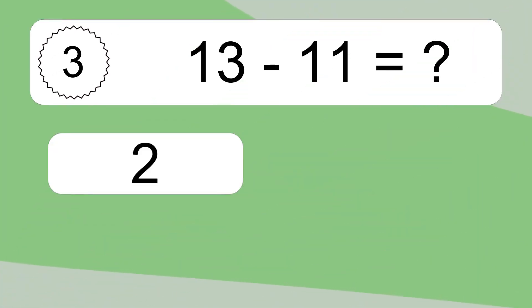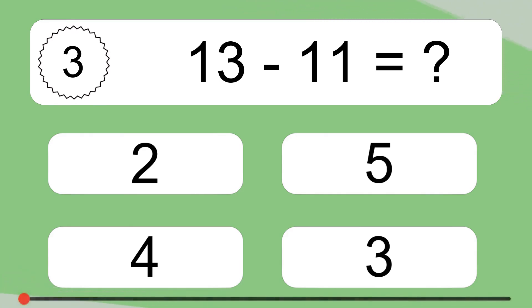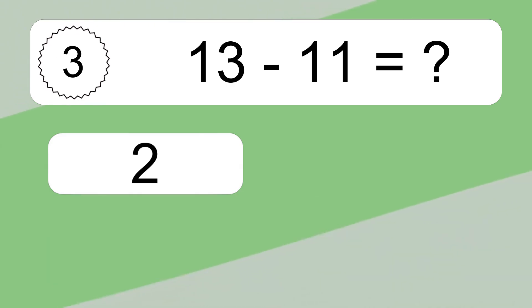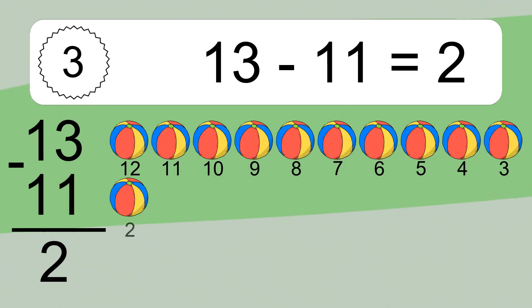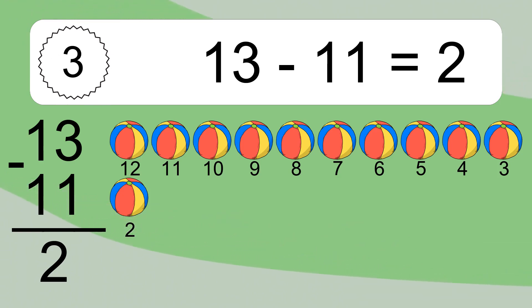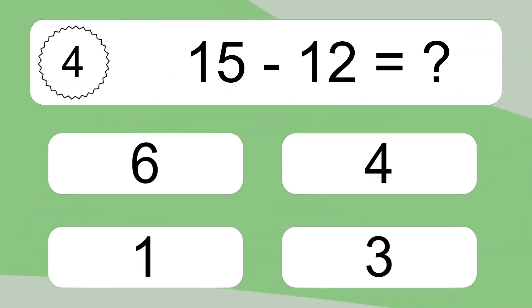13 minus 11 equals what? 13 minus 11 equals 2. Let's count it: 12, 11, 10, 9, 8, 7, 6, 5, 4, 3, 2.